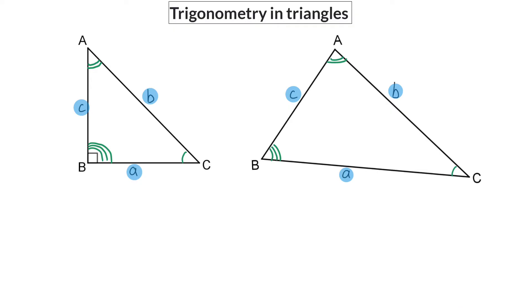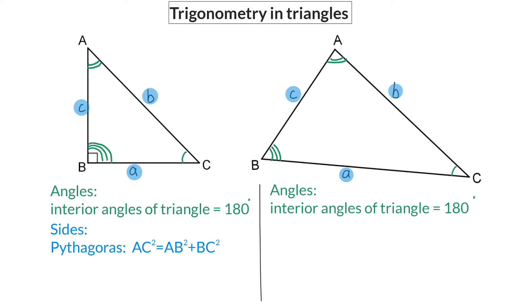Up to now, this is the knowledge you have. Firstly, to determine angle sizes in any triangle, you can use interior angles of a triangle. Then for a 90-degree triangle or right-angled triangle, you can use Pythagoras to determine side lengths. And then also in a 90-degree triangle, in grade 10 you added the knowledge where we used our trig ratios, and that will be a combination of sides and angles.